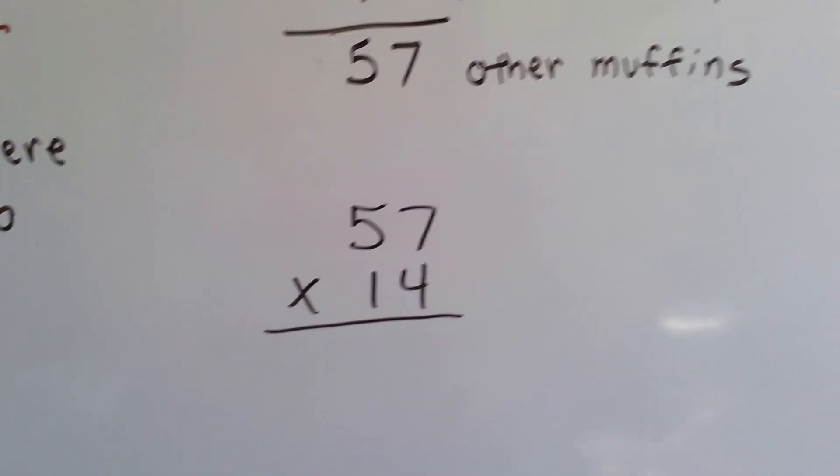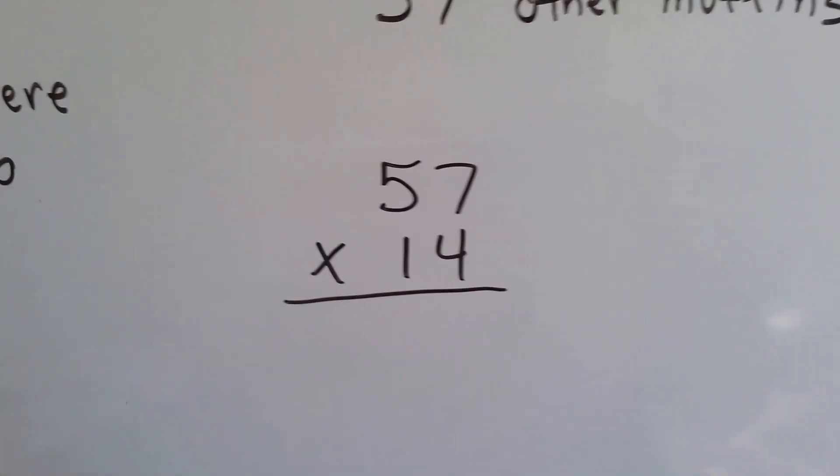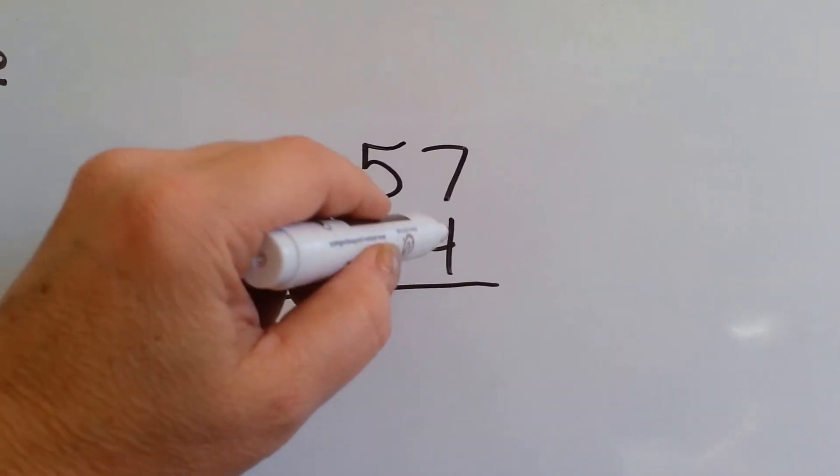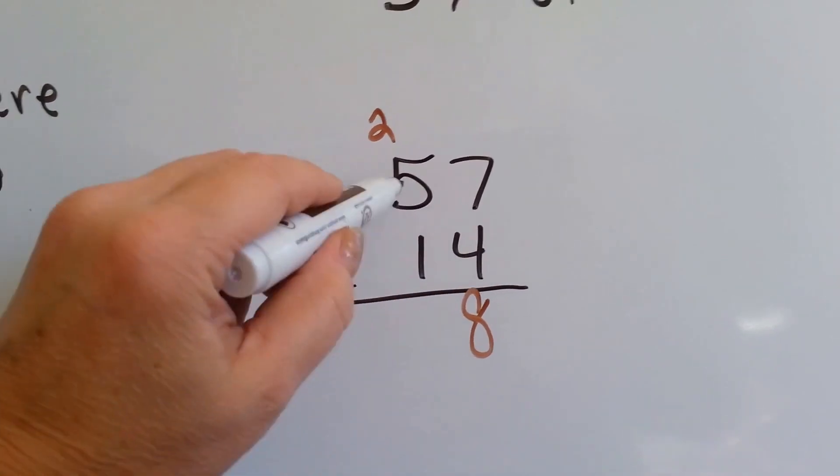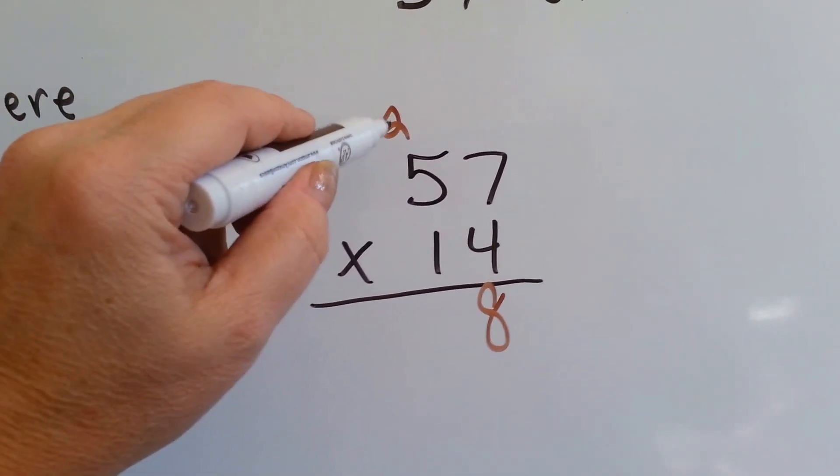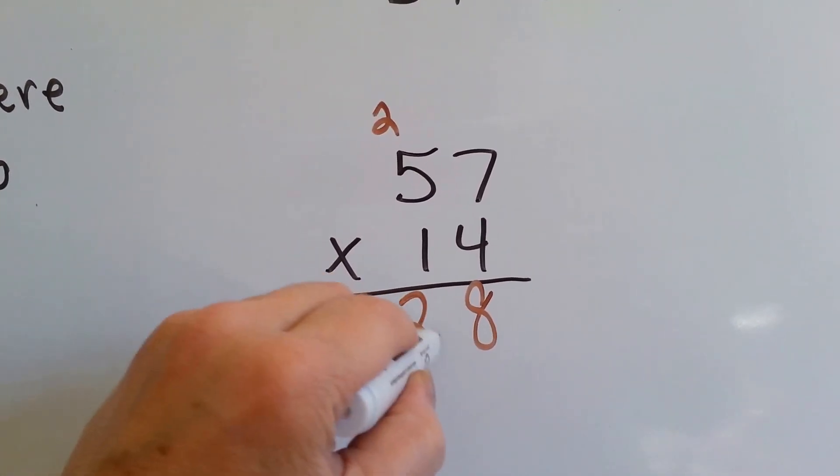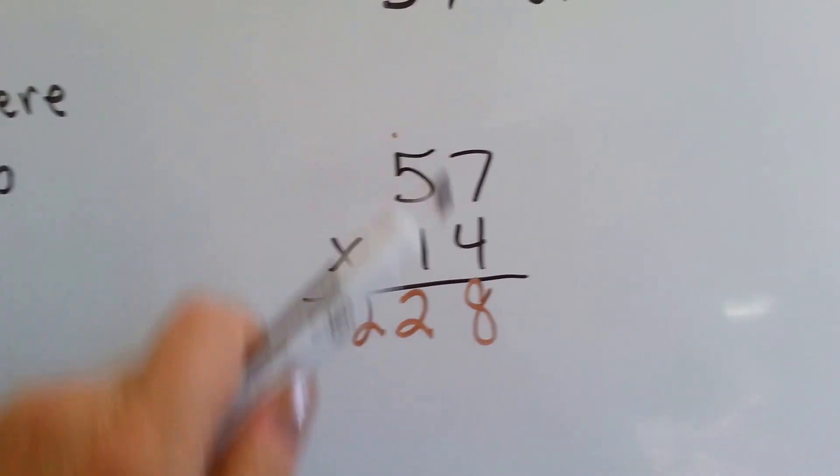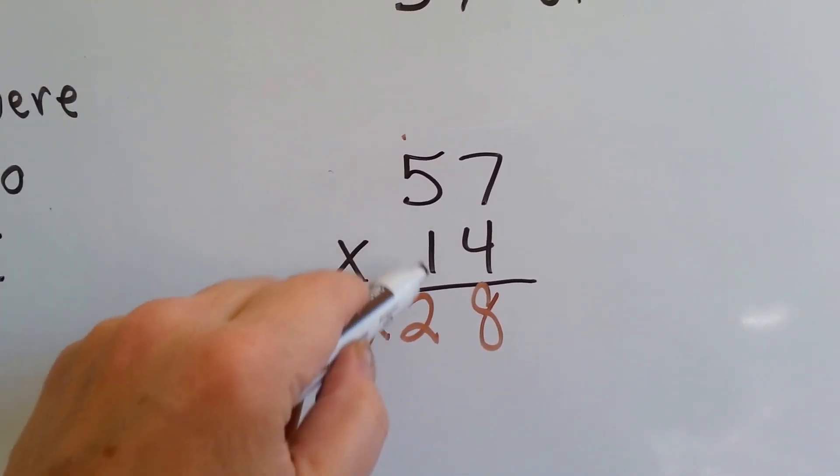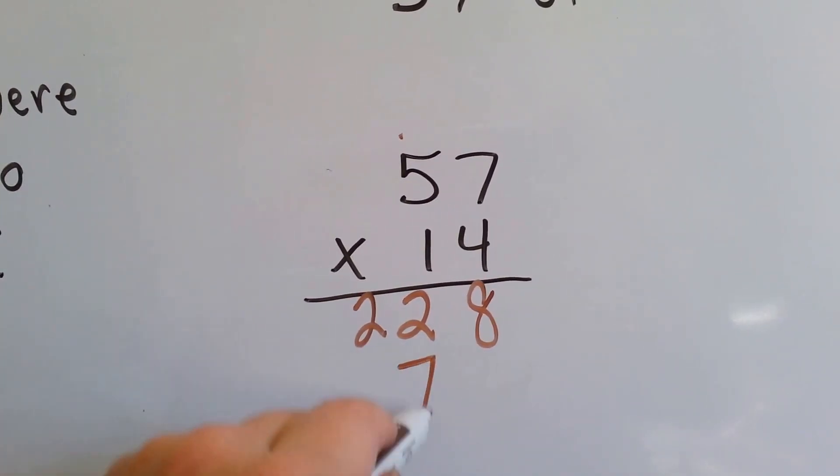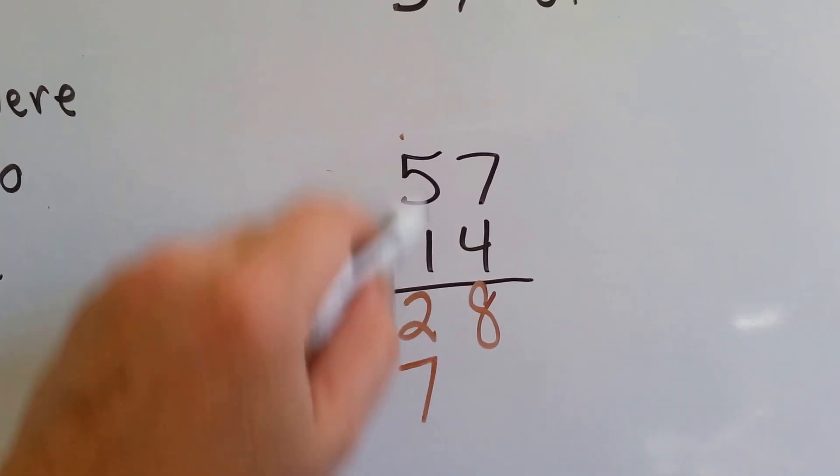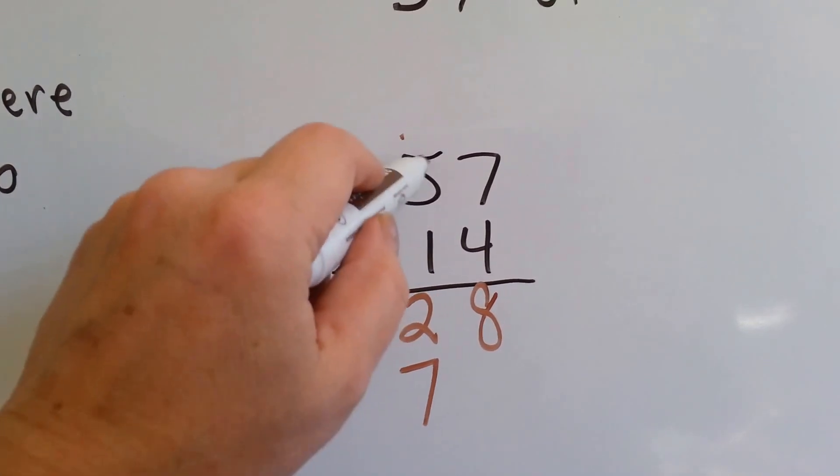Now we need to multiply it by 14 to find out how many she sold for the two weeks. 4 times 7 is 28. We carry the 2 and put the 8 down. 4 times 5 is 20, plus the 2 is 22. Now we have to get rid of that carryover because now we're going to be doing this side. And that was for the ones. 1 times 7 is 7. And it goes here in the tens place because we're multiplying the tens place. And 1 times 5 is 5.